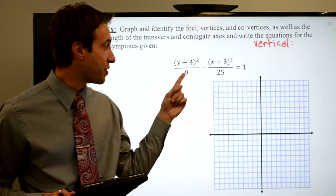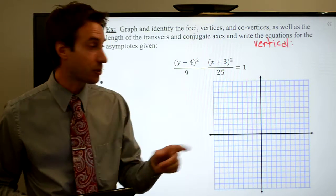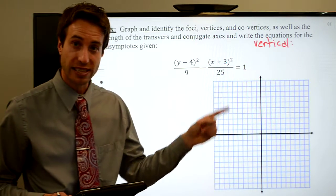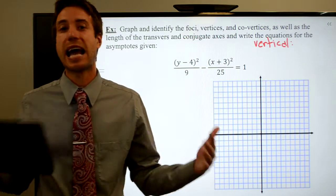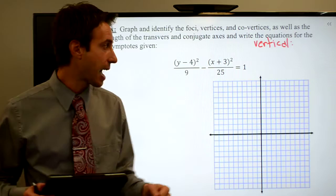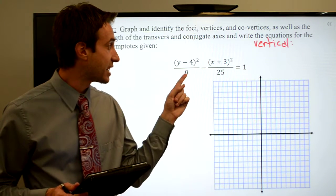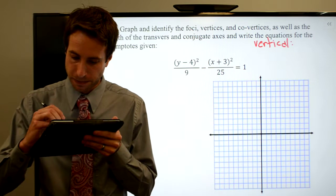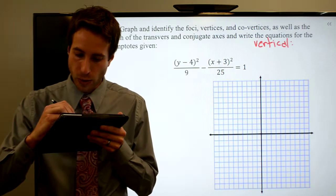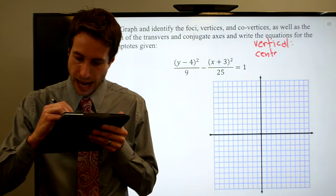It also tells me then that this is a squared. Once again, please notice that this number is smaller than this number. That's okay. It's going to happen for hyperbola. So in this case, a is, that's a squared, so a would be three. Oh actually, you know what? Before we do that, let's get our center,